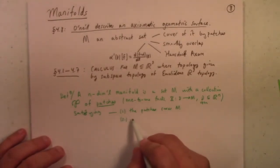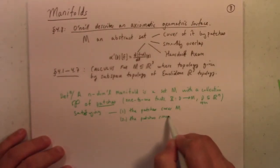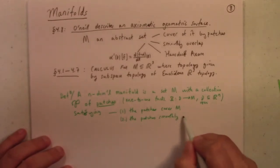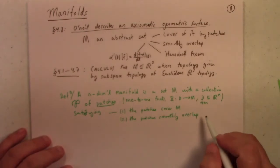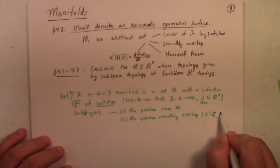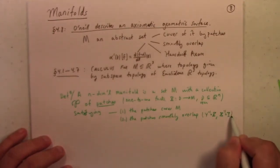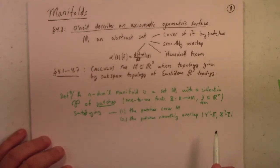Two, they are smoothly overlapping. So if there's an intersection between the images of the patches, then the corresponding y-inverse composed of x and x-inverse composed of y are smooth whenever you have overlapping patch images. Chart domains.